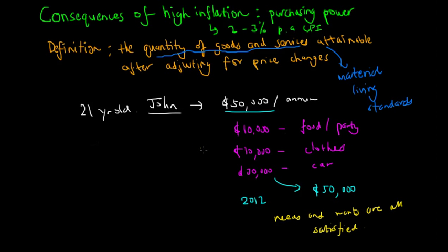We can see that because John only wants food, clothes, and car, he is satisfied with his needs and wants. Therefore his material living standards are to an extent maximized at the current point.